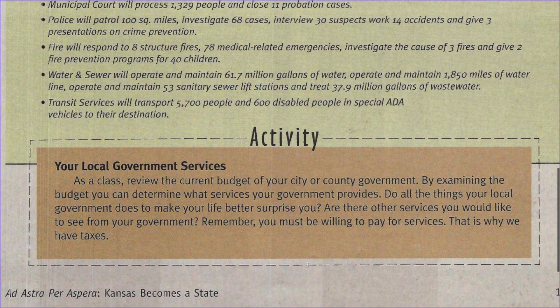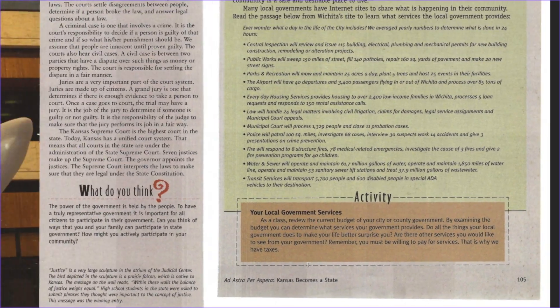As a class, review the current budget of your city or county government. By examining the budget, you can determine what services your government provides. Do all the things your local government does to make your life better surprise you? Are there other services you would like to see from your government? Remember, you must be willing to pay for services. That's why we have taxes.